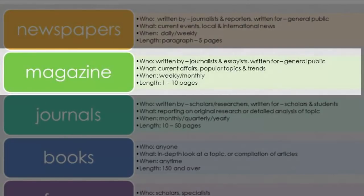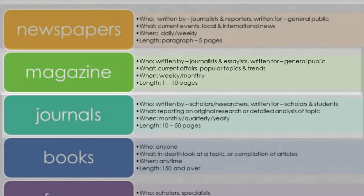Magazine articles are also written by journalists and meant for the general public, but sometimes they're also written by essayists or specialists. The topics are usually current affairs as well as popular topics and trends. They're published weekly and monthly, and the article length ranges from one page to ten pages.